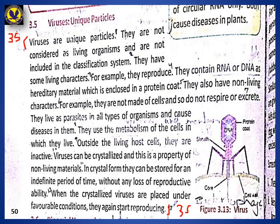When the crystallized virus is placed under favorable conditions again, it will start reproducing. So this virus can be reproduced even from the crystalline form. This is a very unique characteristic. This is your topic on page number 50.